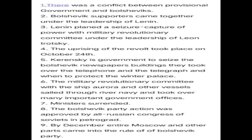The October Revolution of 1917 took place when the Bolsheviks planned a seizure of power under Lenin's leadership. There was a conflict between the provisional government and the Bolsheviks. Fearing the provisional government's growing authority, Lenin planned a secret seizure of power through the Military Revolutionary Committee (MRC), under the leadership of Leon Trotsky.